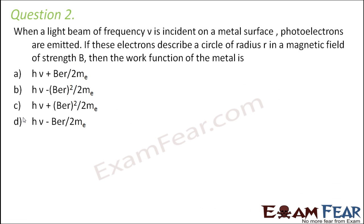Question number 2: when a light beam of frequency ν is incident on a metal surface, photoelectrons are emitted. If these electrons describe a circle of radius r in a magnetic field of strength B, find the work function of the metal. We begin with the photoelectric equation: maximum KE = hν − φ.